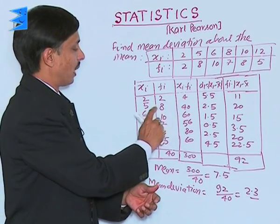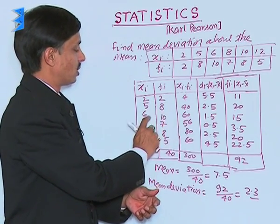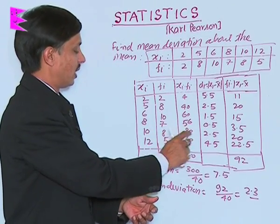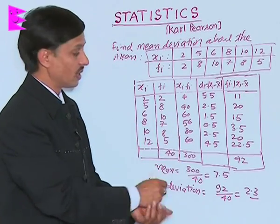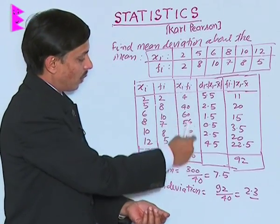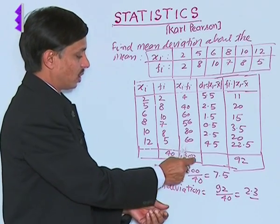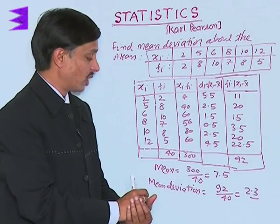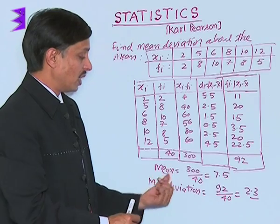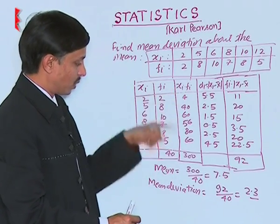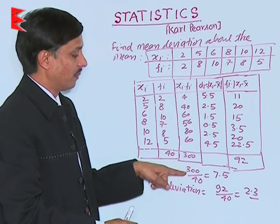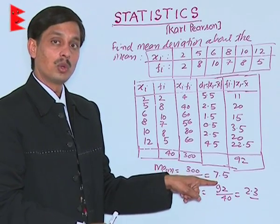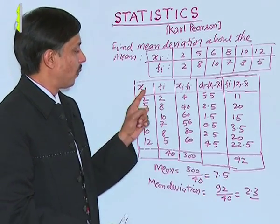Computing xi × fi: 2×2=4, 5×8=40, 6×10=60, 8×7=56, 10×8=80, 12×5=60. The sum of all xi×fi is 300 and the sum of all frequencies is 40. The mean is sigma(fi×xi) / sigma(fi) = 300/40 = 7.5.